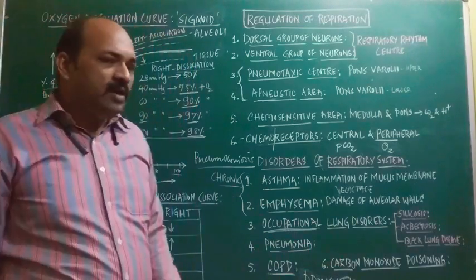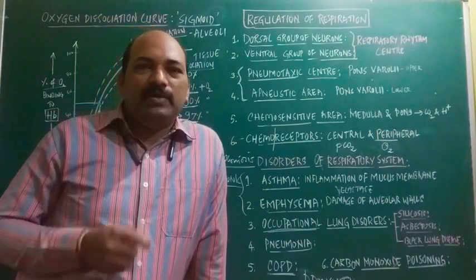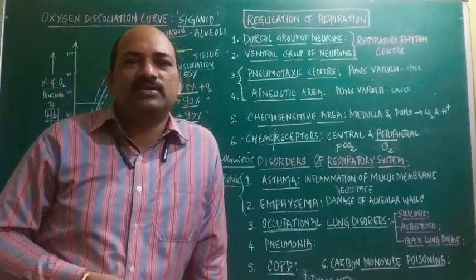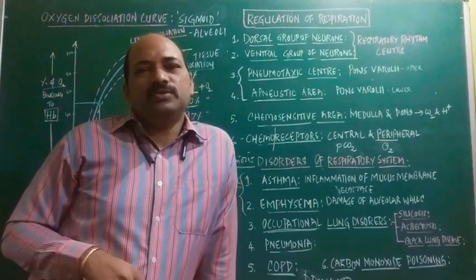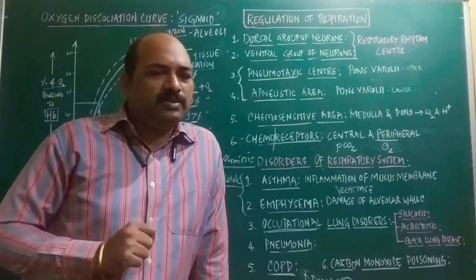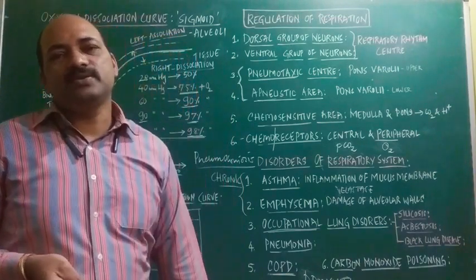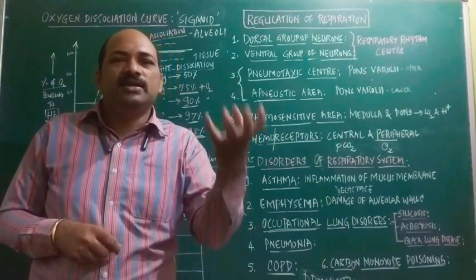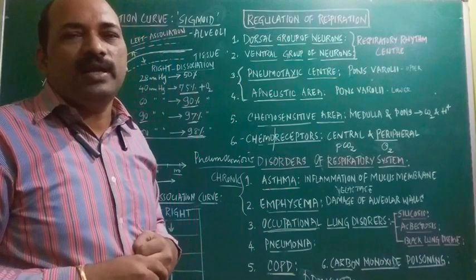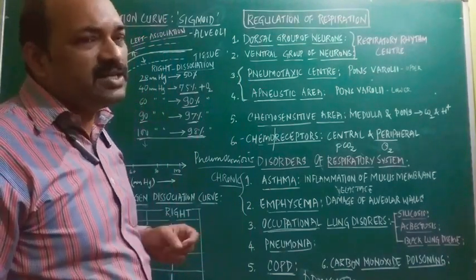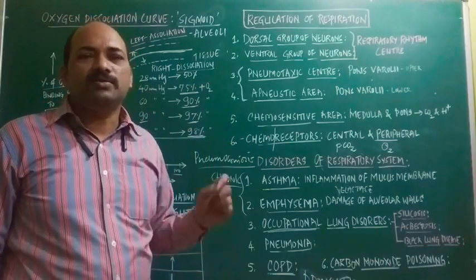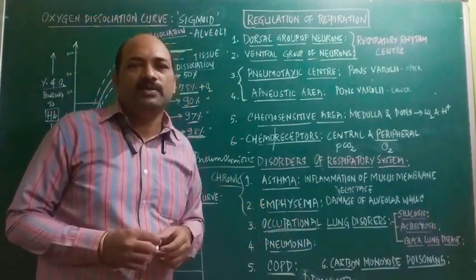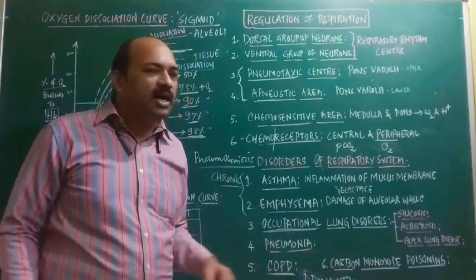Next is carbon monoxide poisoning, commonly seen in sea divers. When a sea diver dives into water for more than a hundred feet without carrying an oxygen cylinder, there is a possibility the individual may die due to accumulation of carbon monoxide. Carbon dioxide formed from tissues dissociates into carbon monoxide (CO) and oxygen (O). Carbon monoxide has 200 times more affinity than oxygen to bind with hemoglobin, so hemoglobin binds with carbon monoxide, preventing oxygen binding — resulting in death.